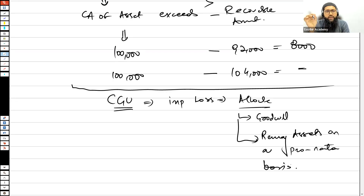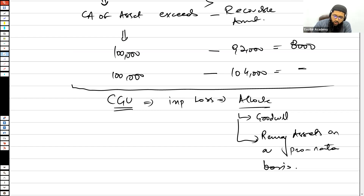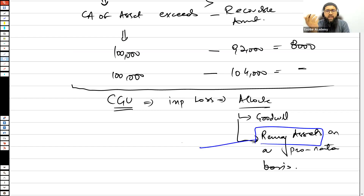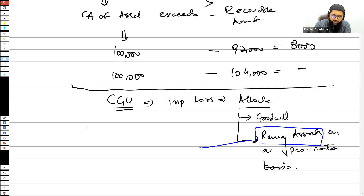In case there is any impairment loss on a CGU, you allocate it to the goodwill first and then to the remaining assets on a pro-rata basis. When we talk about the remaining assets, make sure that assets which are already measured at fair value — or fair value less cost to sell — under the relevant IFRS, the impairment loss is not allocated to them. For example: inventory, financial assets, and investment property.